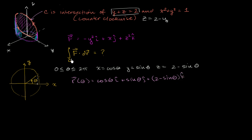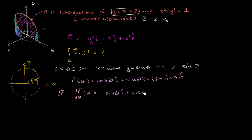Now we're ready to evaluate the line integral. We need to figure out what f·dr is, and to do that we need to figure out what dr is. dr equals (dr/dθ)dθ. Taking the derivative of r with respect to theta: the derivative of cos θ is −sin θ, giving −sin(θ)i; the derivative of sin θ is cos θ, giving +cos(θ)j; and the derivative of 2 − sin θ is −cos θ, giving −cos(θ)k. So dr = (−sin θ i + cos θ j − cos θ k)dθ.